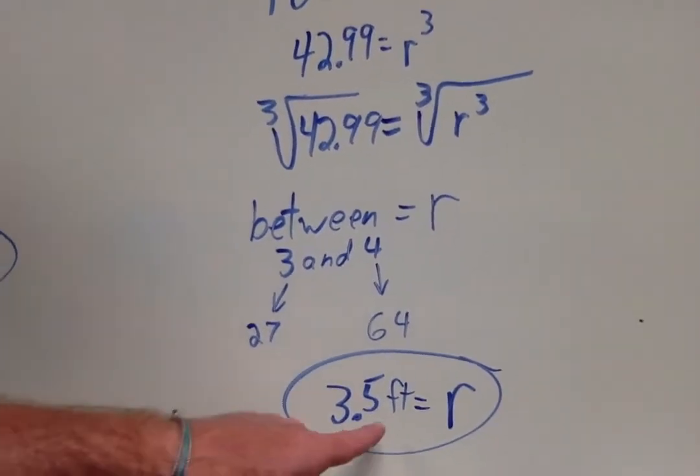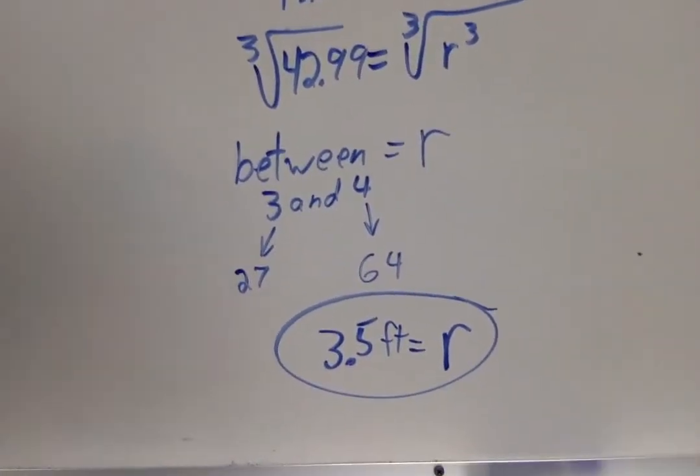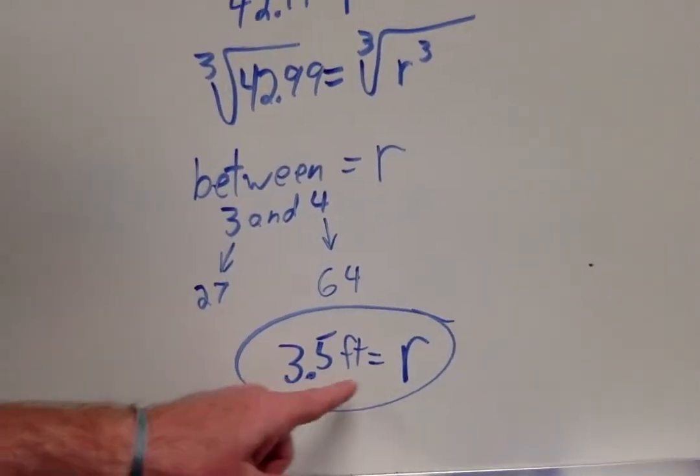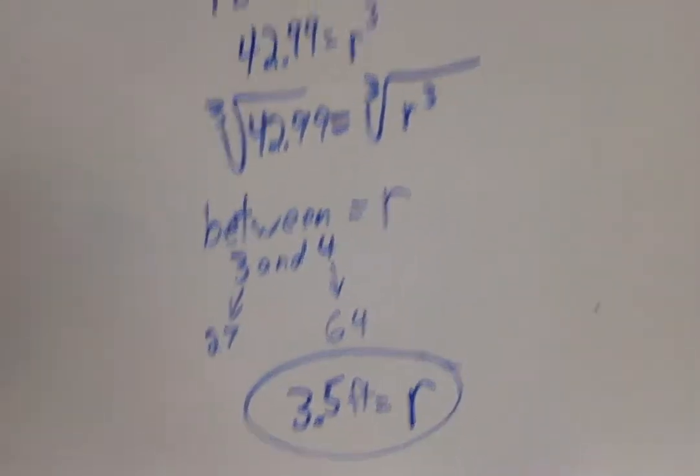So, I started guessing and checking, and actually the first one I guessed was pretty darn close! 3.5 cubed is going to be really close to 43, everybody! So, let's say the radius is 3.5 feet!